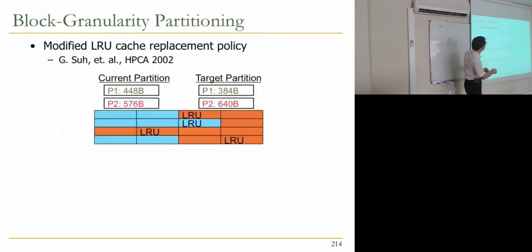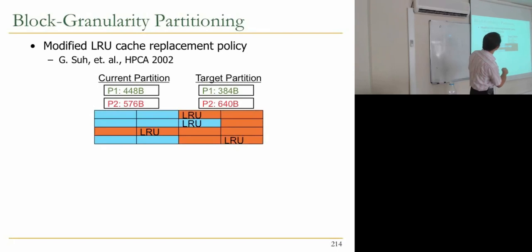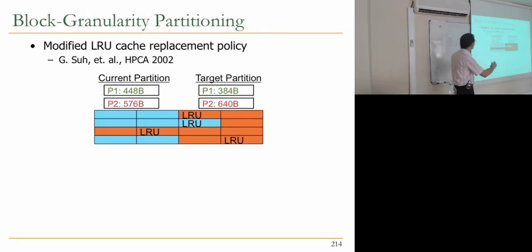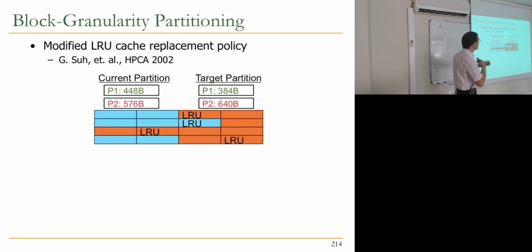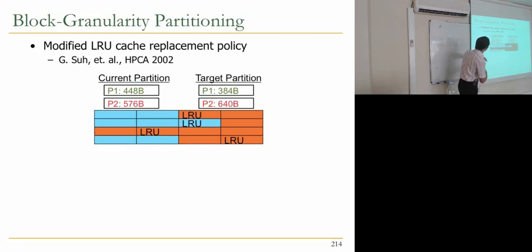They use block-granularity partitioning, keeping track of current partition and a target partition. Because the target partition aims to achieve equal slowdown, they can increase and decrease the partition allocated to different cores or processors.